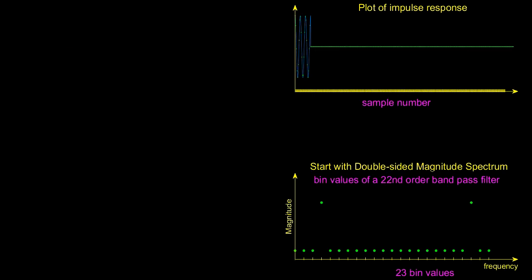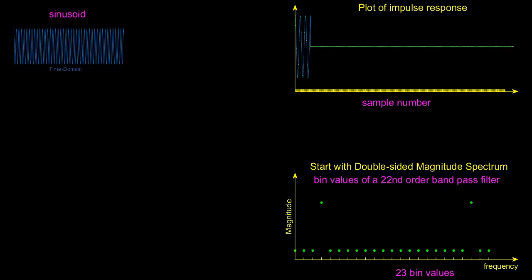One way to think about this impulse response is as being a sinusoid which by definition exists for all samples being multiplied by what's referred to as a rectangular window. So the sinusoid on the left multiplied by the rectangular window in the middle is equal to the impulse response shown on the top right.